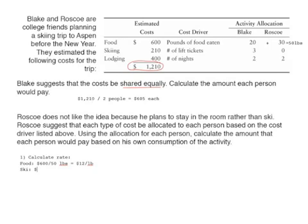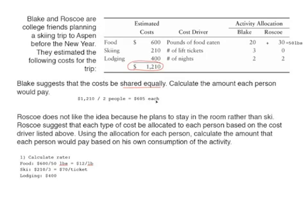For skiing, the cost is $210 and the total number of lift tickets is three (three plus zero), giving a rate of $70 per ticket. For lodging, the estimated total cost is $400 and each person is staying two nights, for a total of four nights. So the allocation rate for lodging is $100 per night.